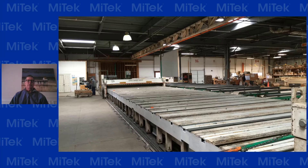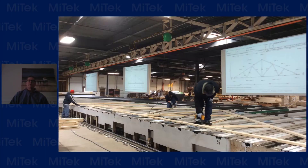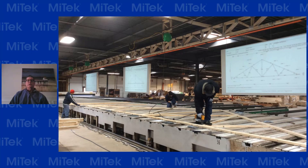Moving to the disadvantages of a solid top system, number one is ergonomics. Two characteristics of working on top of a solid top table are bending over basically from the waist to work on particular joints, and having to kneel down on the table to work closer on particular spots. With a walkthrough system it doesn't happen everywhere, but in many cases workers don't have to be in those kinds of positions in order to work on the truss.